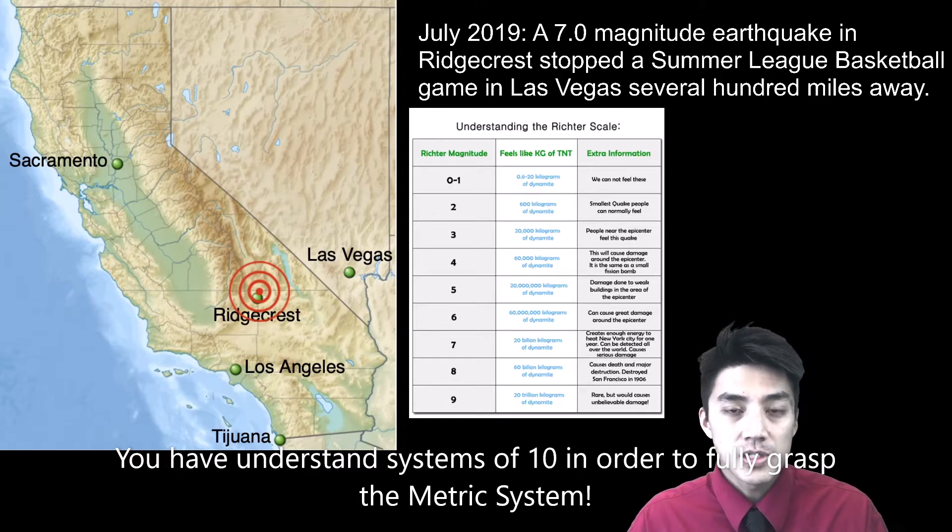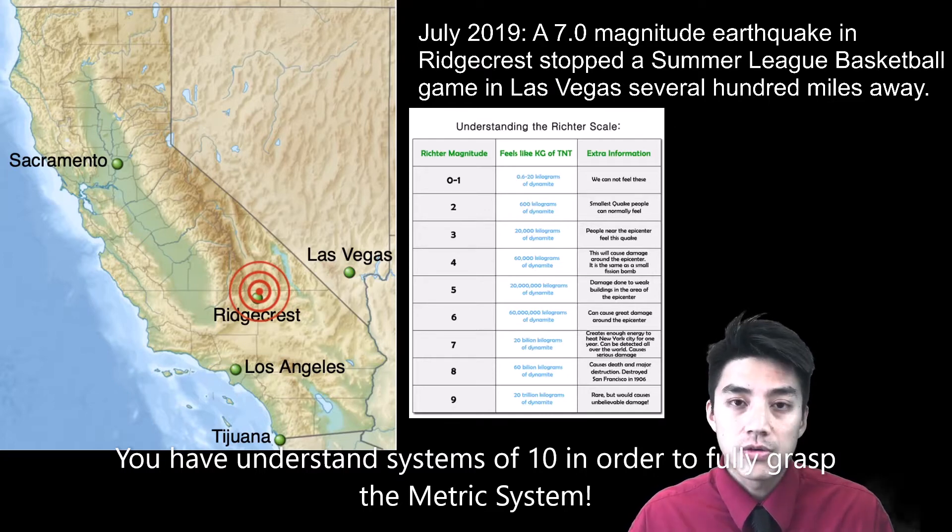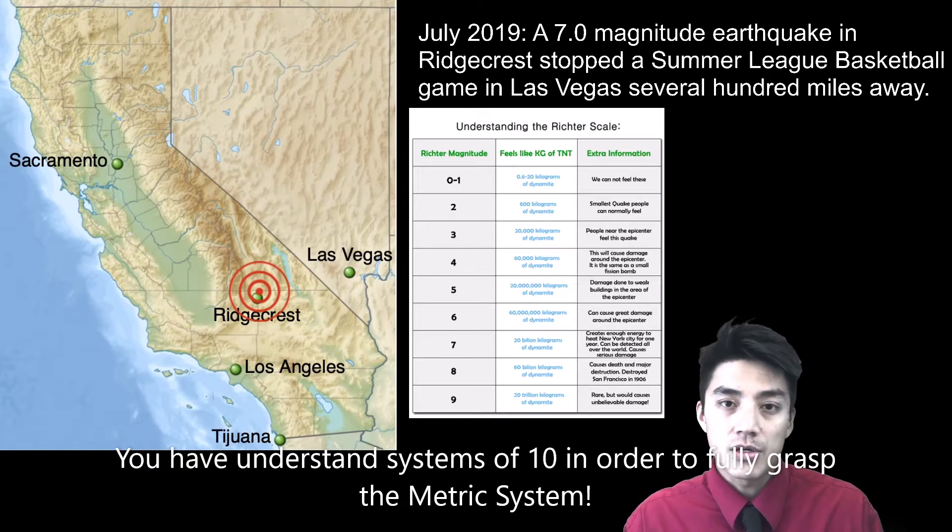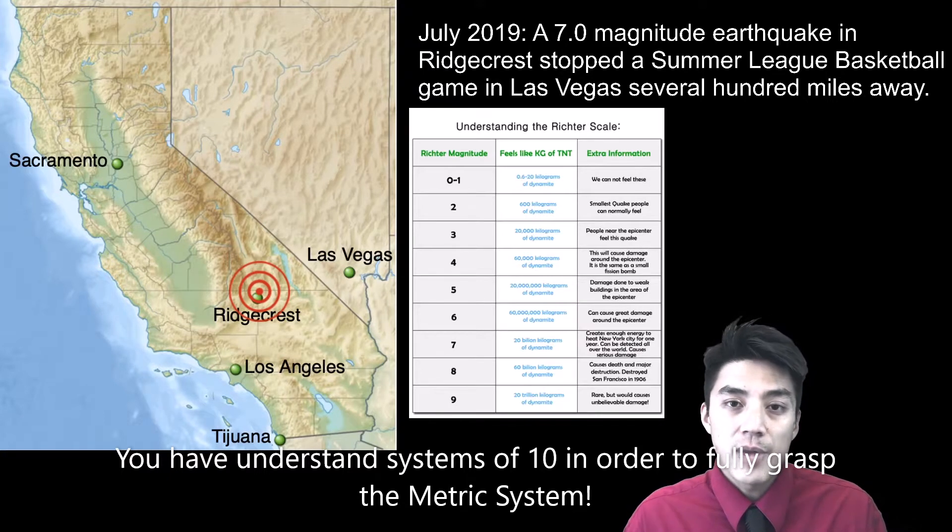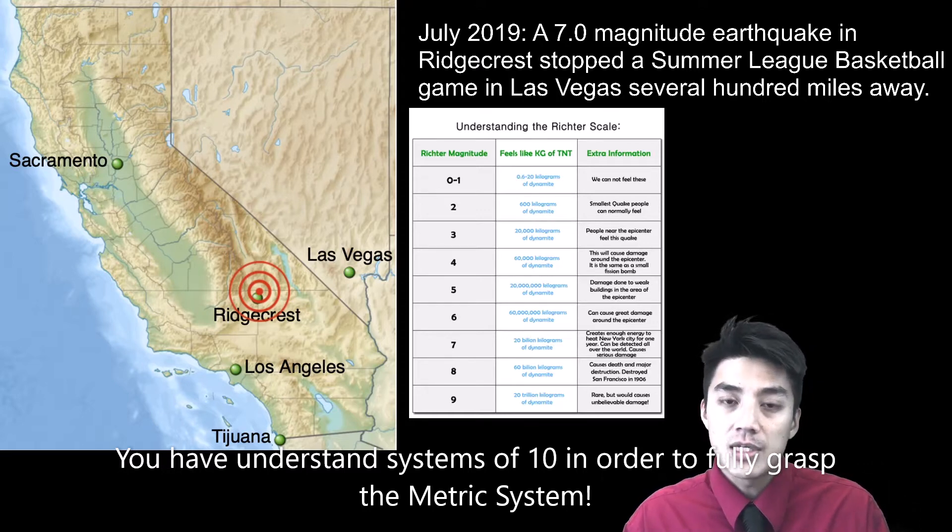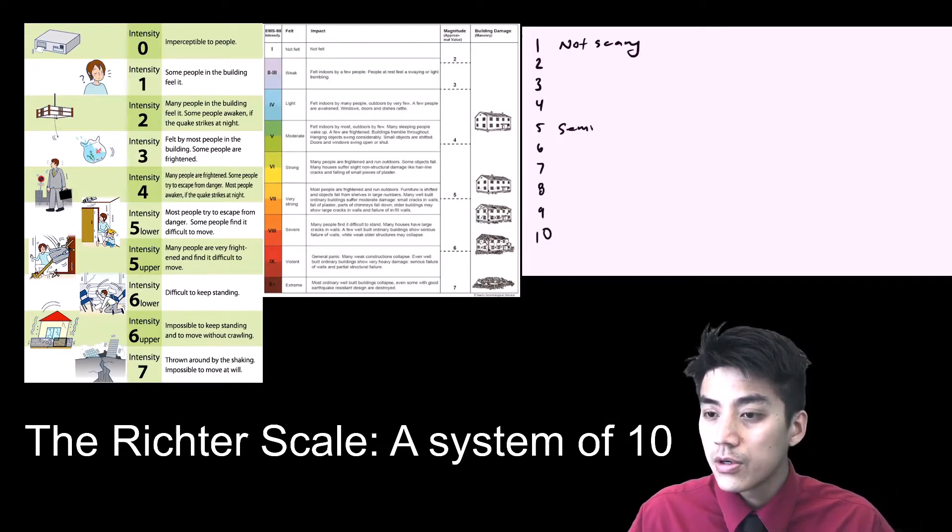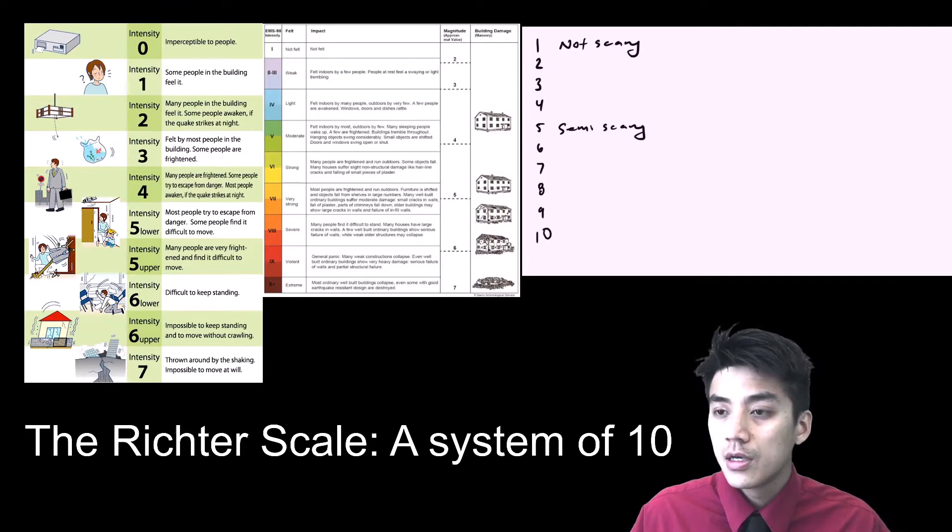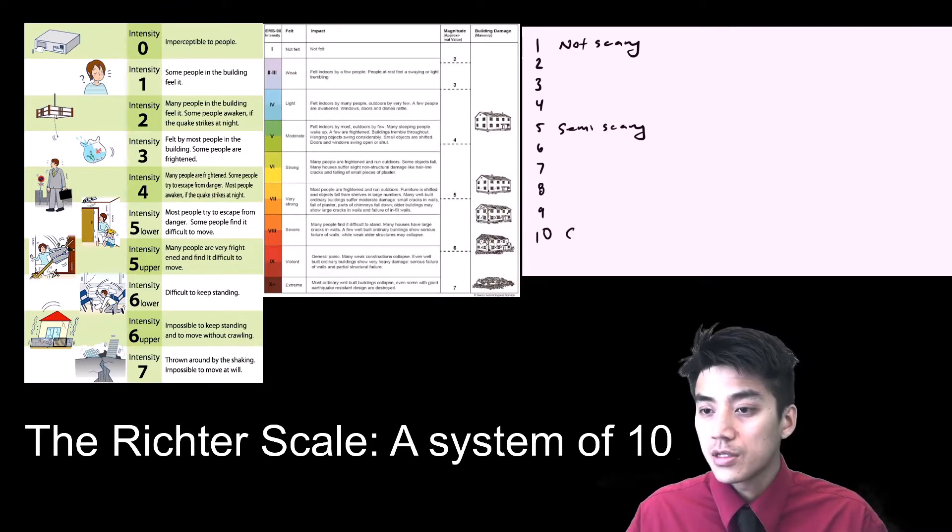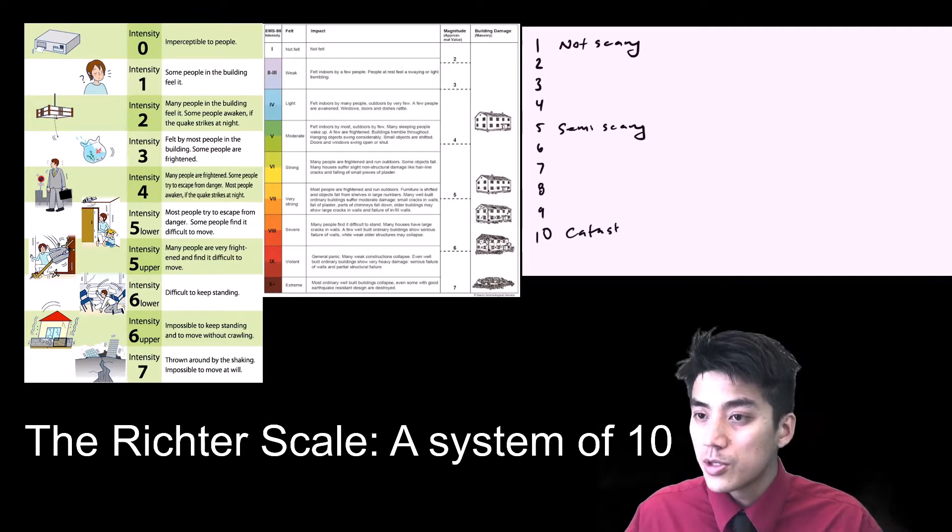But to put into perspective how powerful a 7.0 magnitude earthquake is, you have to understand the Richter scale, which is based on a system of 10. So according to the chart that I've provided, a 7.0 magnitude earthquake is equivalent to 20 billion kilograms of dynamite. That's enough power to light up the city of New York for an entire year. So just imagine an 8.0 or a 9 or a 10.0 magnitude earthquake. Those are extremely scary, and they're catastrophic, because they're so much stronger than a 1.0 earthquake.